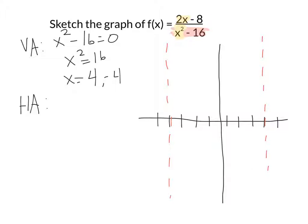So we call this thing bottom-heavy, and every bottom-heavy rational function has y equals 0 as its horizontal asymptote. We're going to have a horizontal asymptote running right through the x-axis because that's where y equals 0.